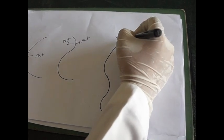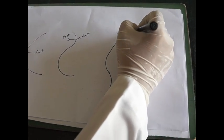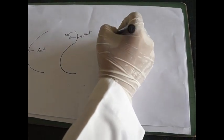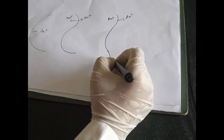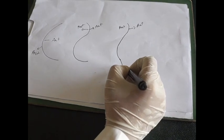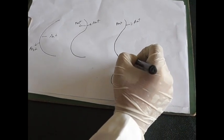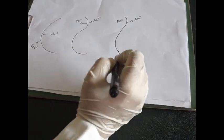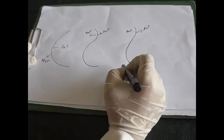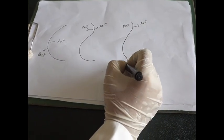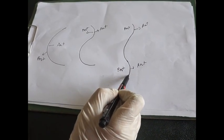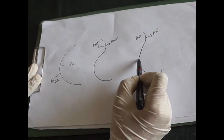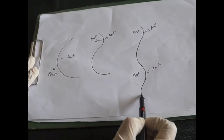Here is the cervical part with the cervical curvature formed after birth. Similarly, a curvature forms in the lumbar region after birth when the child starts walking, around one to one and a half years after birth — this is another secondary curvature in the lumbar vertebrae. The primary curvatures are retained in the thoracic region and in the sacral region.